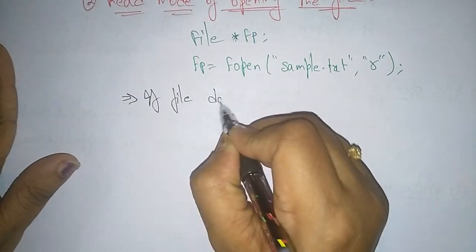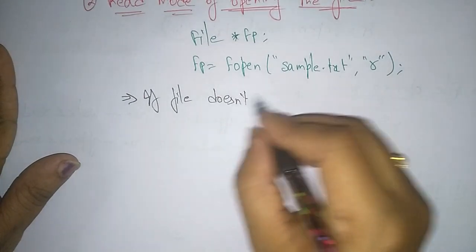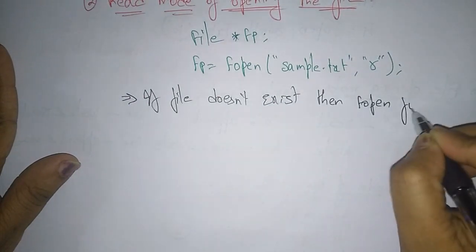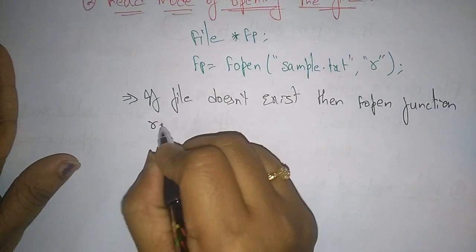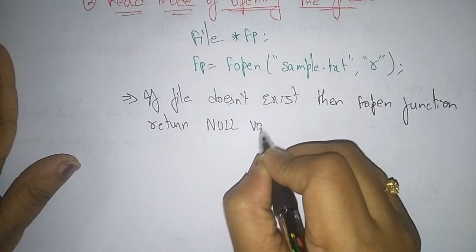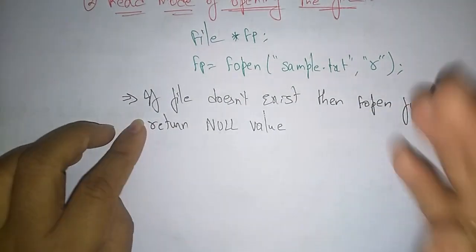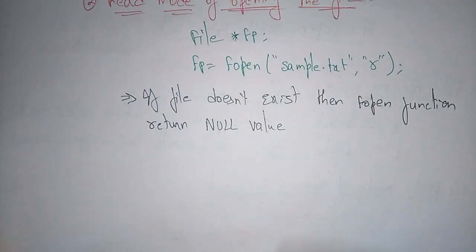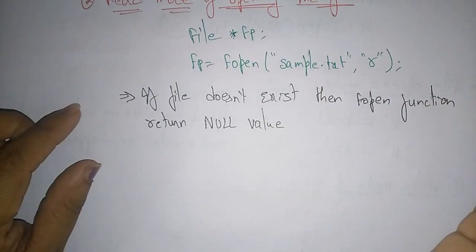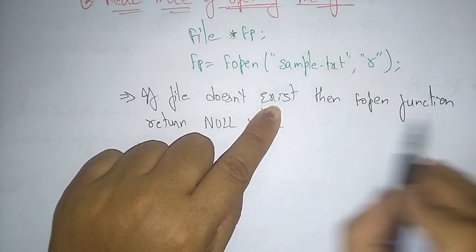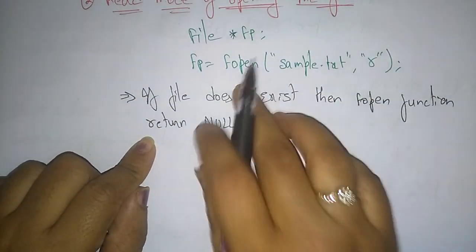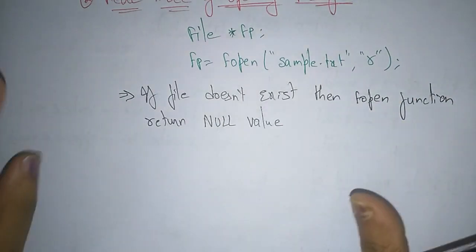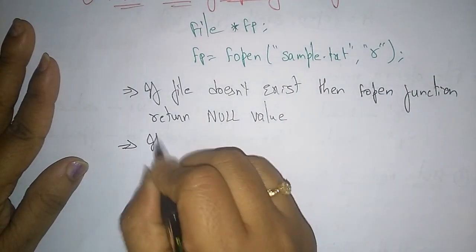If the file does not exist, then the fopen function returns NULL. Why does it return NULL? In write mode, if the file does not exist it creates a new file because we are writing and storing information there. But in read mode, if the file does not exist, fopen returns only NULL. If sample.txt is not there, there is nothing to read, so it returns NULL.